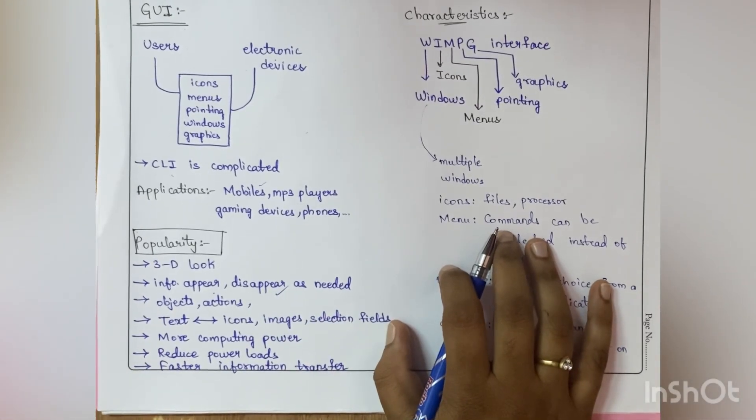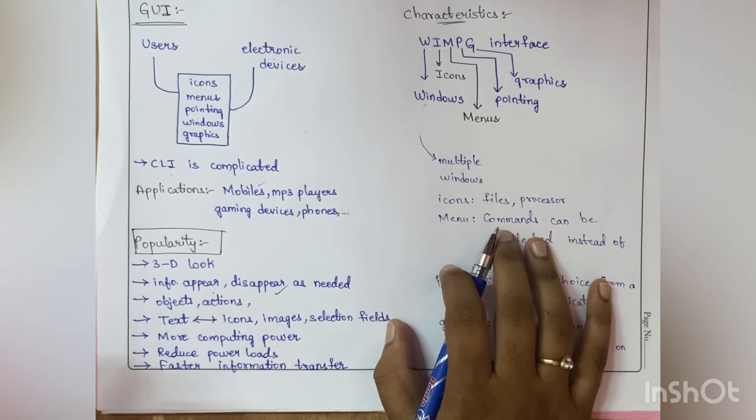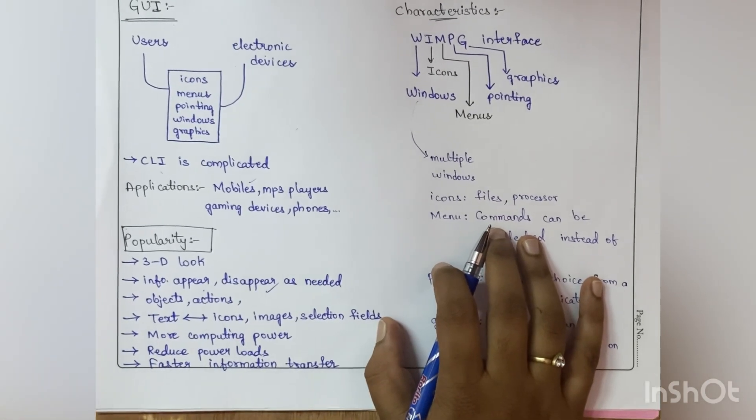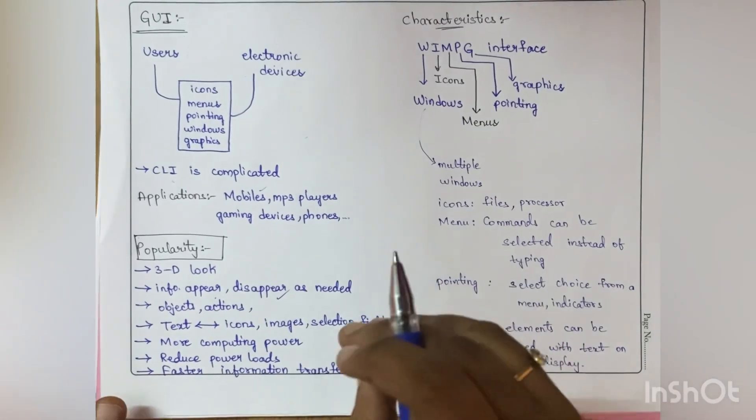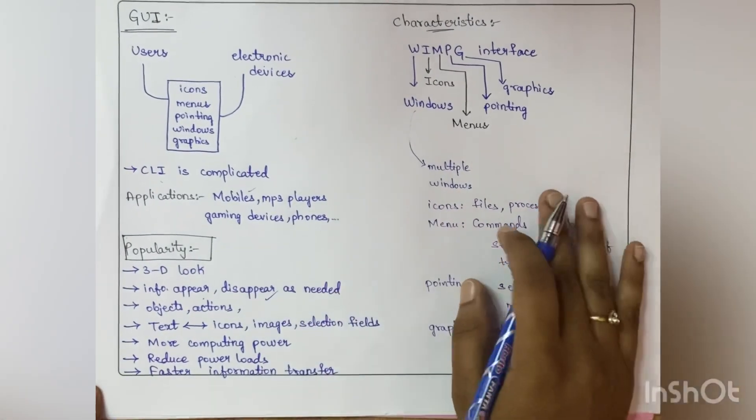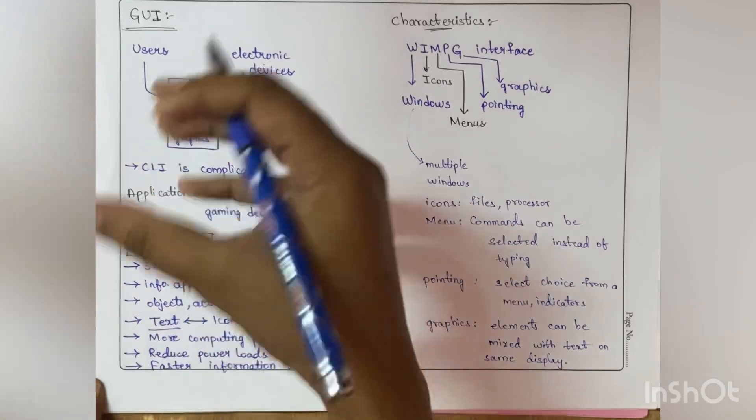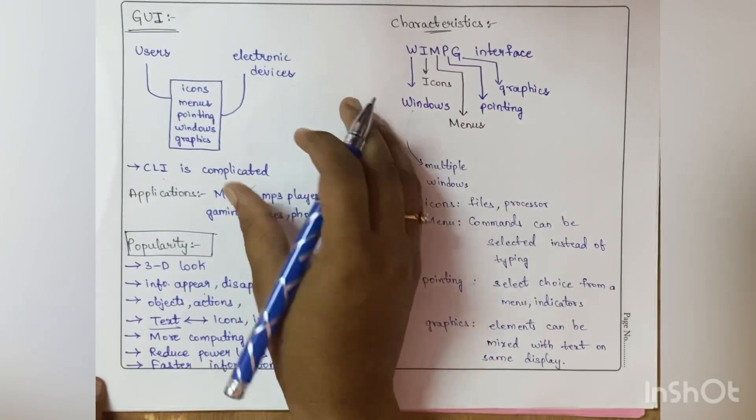Say suppose whenever you click some button it directly submits - that means objects and actions. Here the object is the submit button and the action is submission, like you're sending your data to some other file or place. Coming to text, previously it was completely text-based, right? Now this text is completely replaced by icons, images, and selection fields.